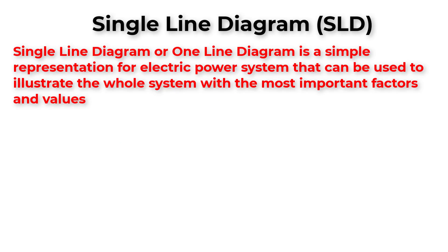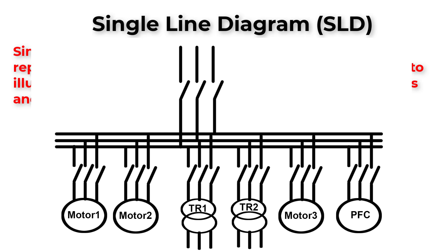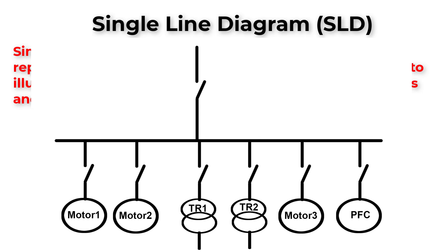A single line diagram or one line diagram is a simple representation for an electric power system. As you can see in this three-phase power system, we can simplify it into a single line diagram for a clear and concise overview.